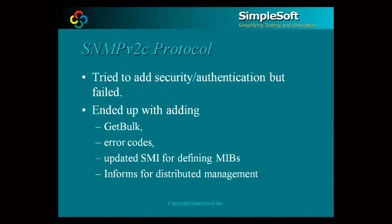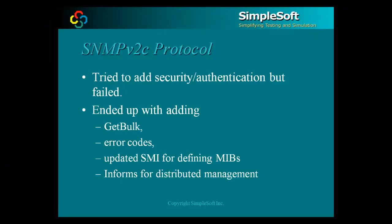SNMP v1 became quite popular and started getting deployed in large numbers. With experience, the shortcomings of SNMP became more apparent, and so in 1992 a set of enhancements were published to address these shortcomings, including proposals to add security and authentication to the SNMP protocol. These proposals turned out to be too complicated to deploy, and only parts of it called SNMP v2c, or SNMP v2 with community strings, got deployed. It included additional PDU types like get-bulk to make table retrieval more efficient, better error codes, an updated syntax for defining MIBs, and better support for distributed management.